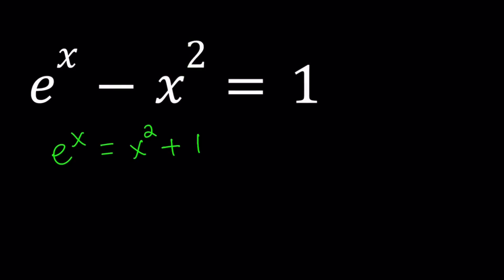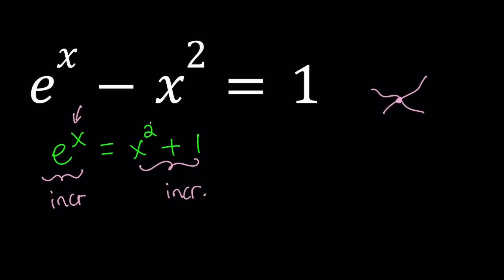So here's what I'm seeing. I do see an increasing function on the left-hand side, and I do see another increasing function on the right-hand side. So it doesn't really tell me anything. If I had a decreasing function on the other side, then I could safely say there is a single solution. But here's the thing: e to the power x, even though both functions are increasing, e to the power x is going to grow faster than x squared plus 1, because this has exponential growth — this is just a parabola.